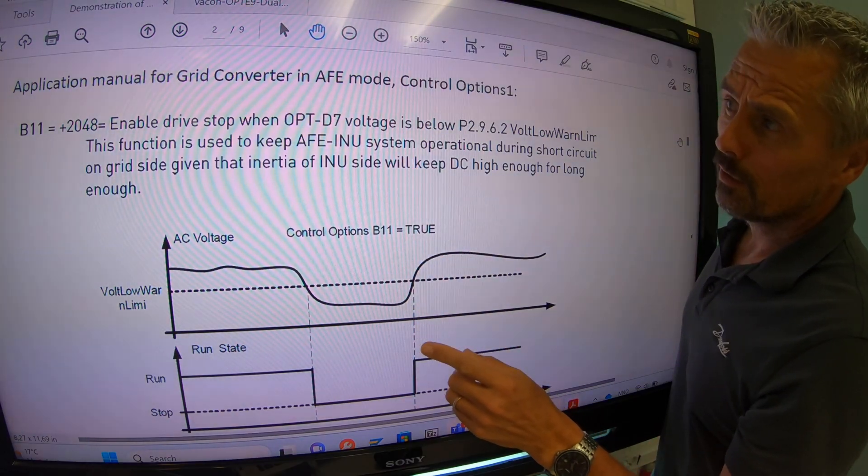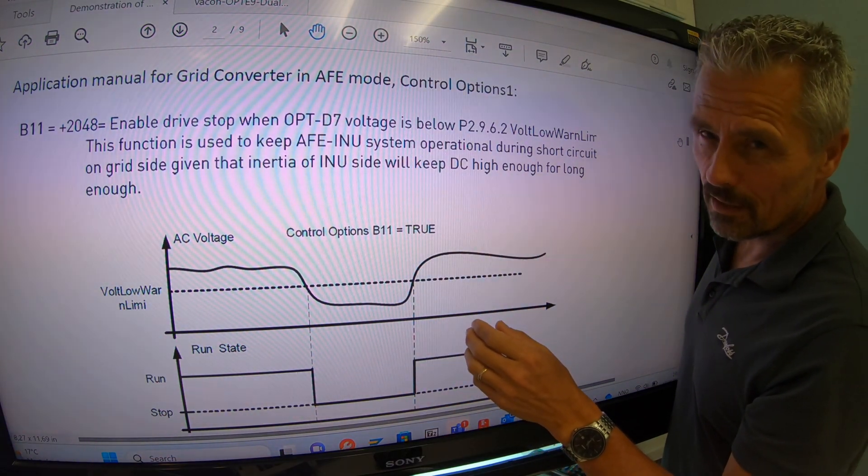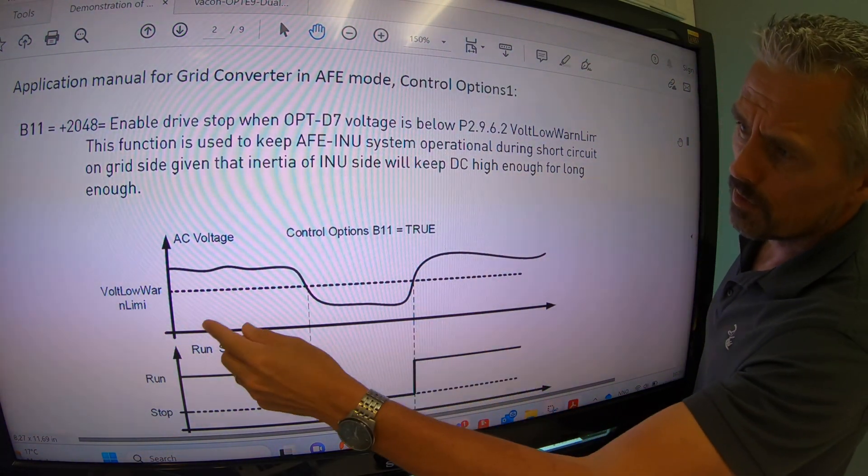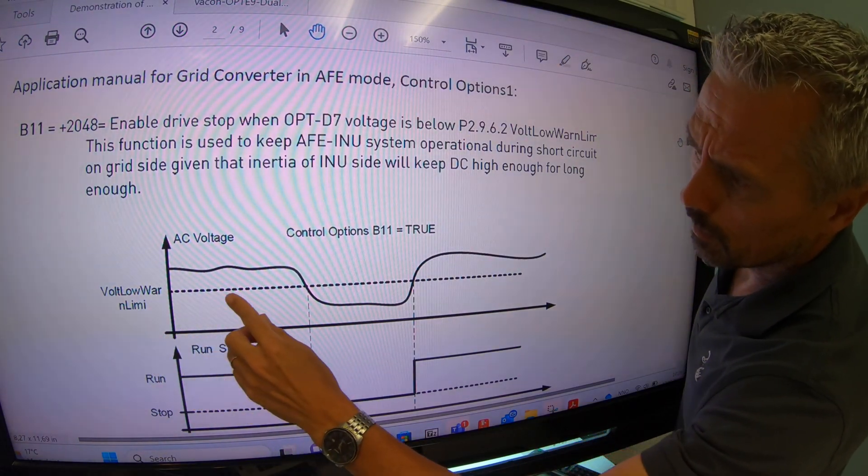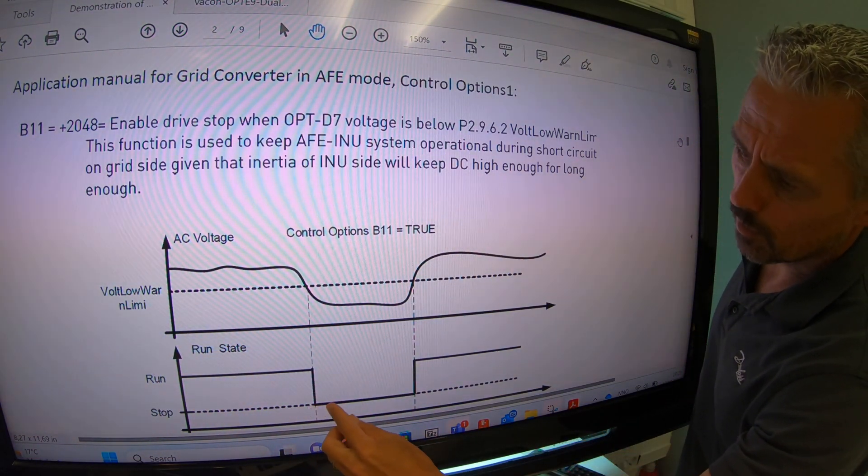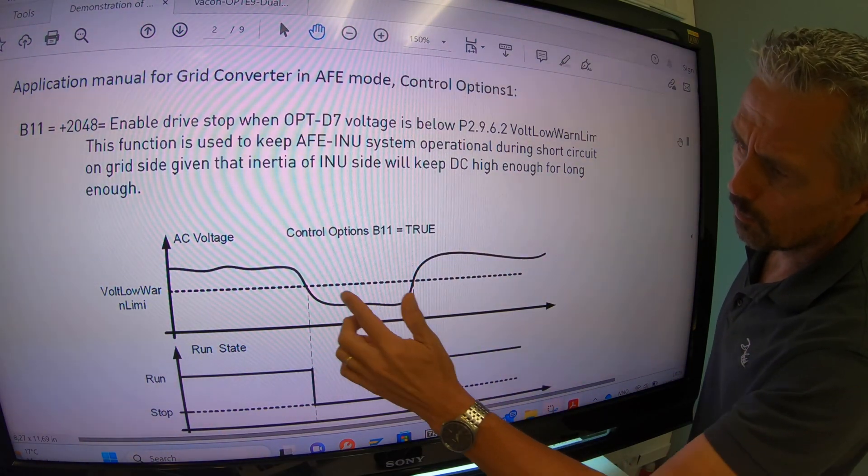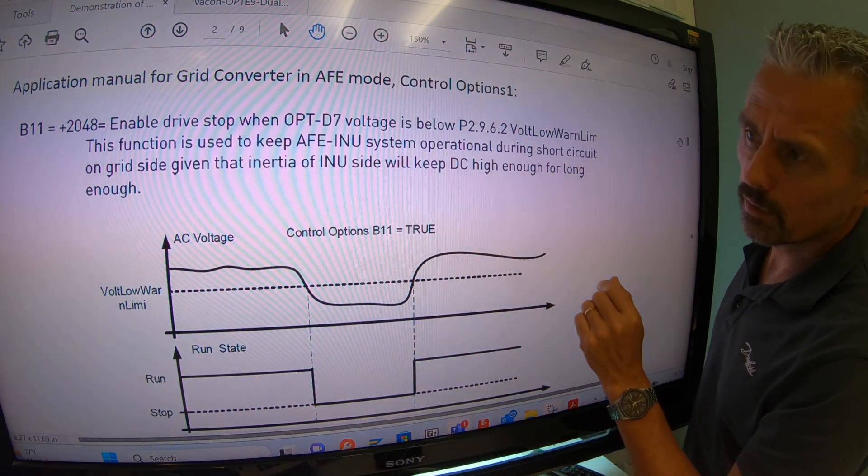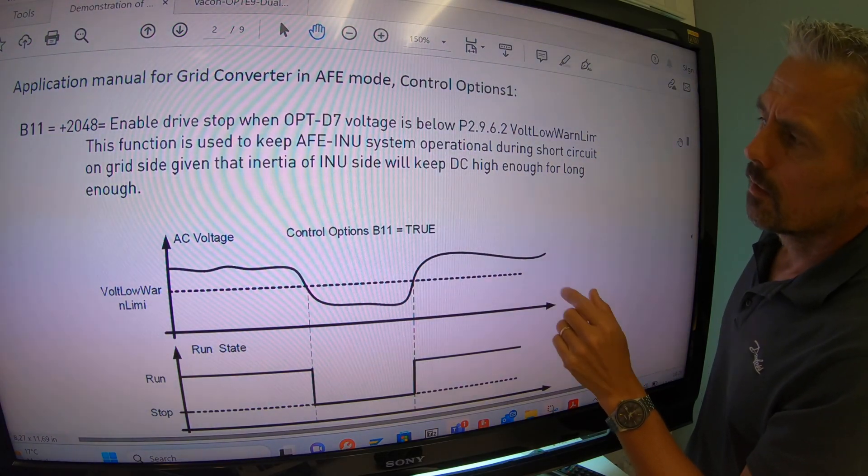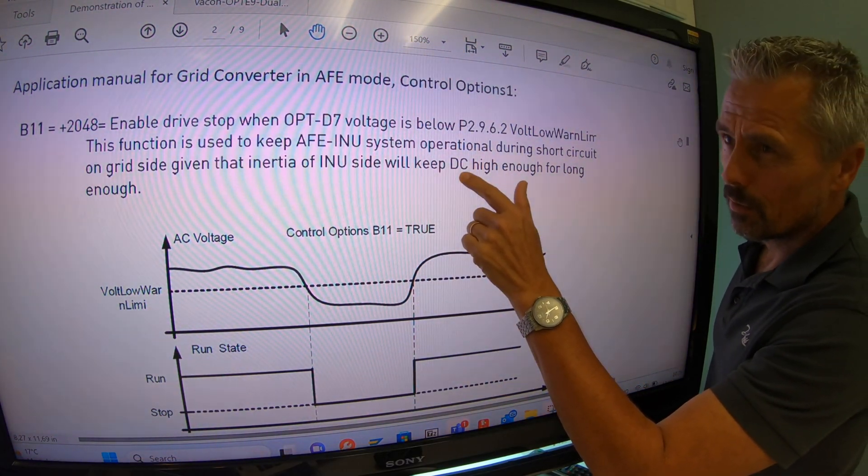In the application manual for the grid converter, the bit 11 functionality is explained. Here we see how the voltage low warning triggers the disabling of the running of the drive and keeps it running again when the voltage goes above the warning level. Note that the DC link cannot go to zero.